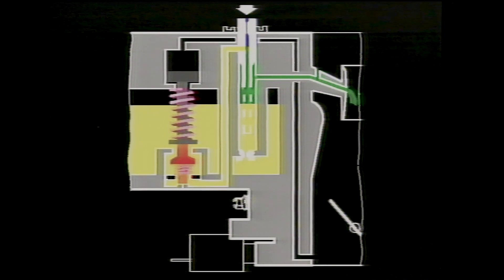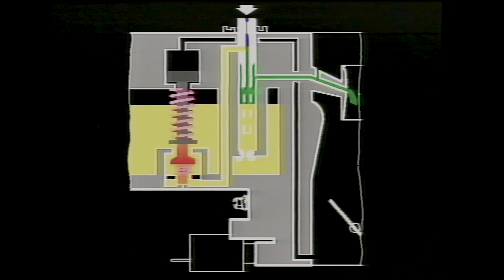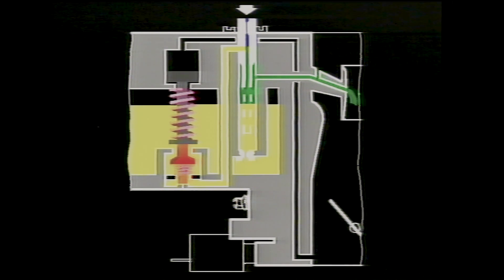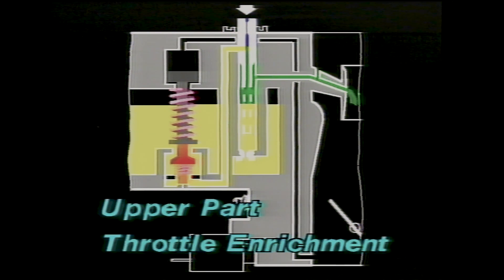The 2B carburetor's enrichment system operates in the same way and for the same reason, but uses a piston and separate fuel enrichment valve instead of a one-piece diaphragm unit. Like the 1B1, operating in this way, it is called upper-path throttle enrichment.